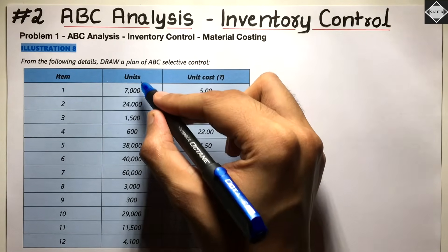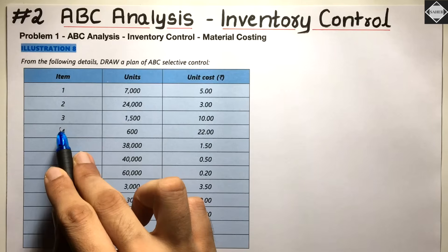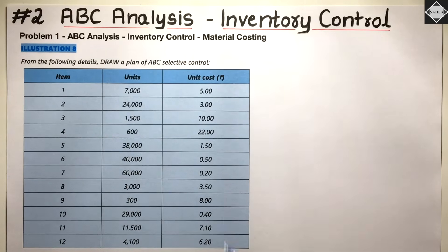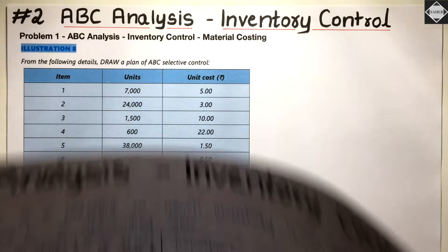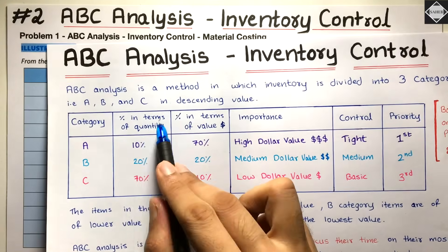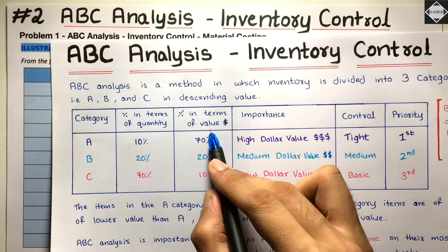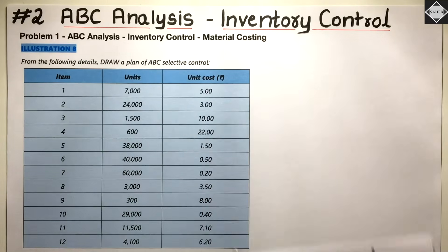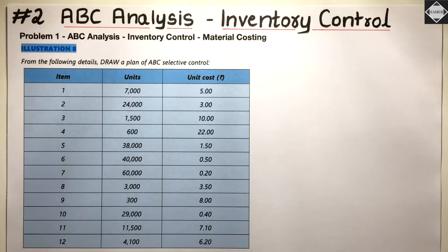We have 12 different items with their quantities — item 1: 7,000 units, item 2: 24,000 units, item 3: 1,500 units, and so on — along with the unit cost per item. The unit cost alone is not important; we need the total value. In ABC analysis we work with percentage in terms of quantity and percentage in terms of value, not price per unit. Value means total cost, so we multiply units by unit cost to get the total cost.